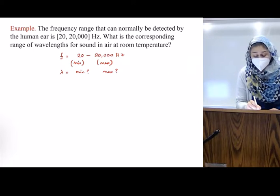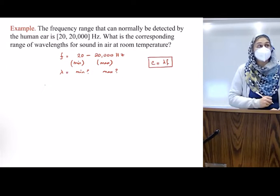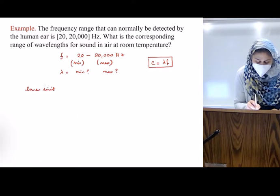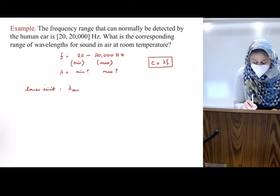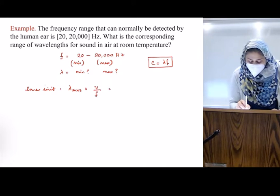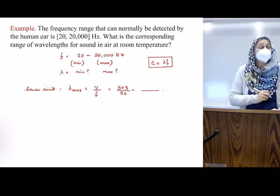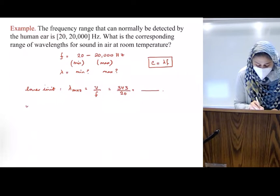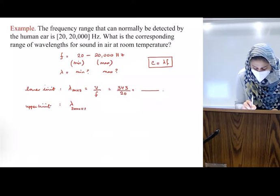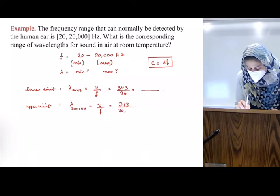That actually is a very easy calculation. So we know speed equals distance over time or lambda f. So for the lower limit, I can write lambda at 20 hertz. That's how I would write it as speed divided by frequency, which is 343 divided by 20. And lambda for upper limit, 20,000 hertz will be speed divided by frequency, 343 divided by 20,000.